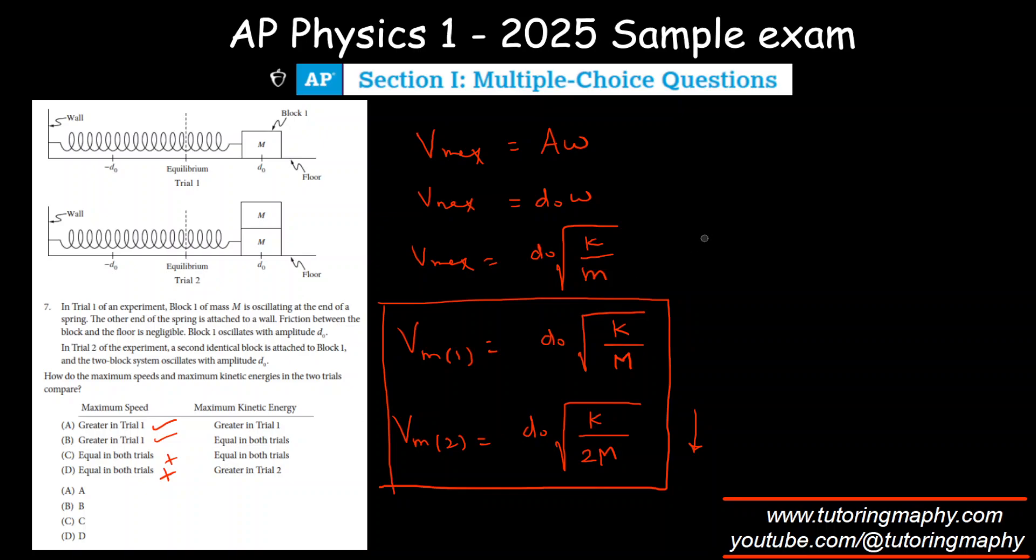Kinetic energy is pretty straightforward. Kinetic energy is given by half mv squared, so maximum kinetic energy in Trial 1 is half M times V max of case 1 squared, and we already have V max of case 1.